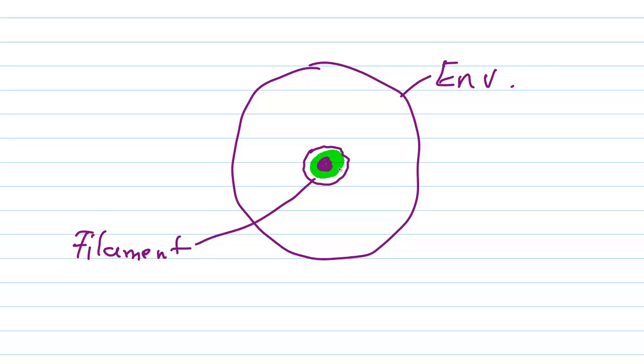Sometimes the filament actually serves as the cathode. That is called a directly heated cathode. In a lot of cases, the cathode is a separate cylinder of metal which gets really hot because of that filament, and that cathode is connected to the negative polarity of the power supply, that might be ground.